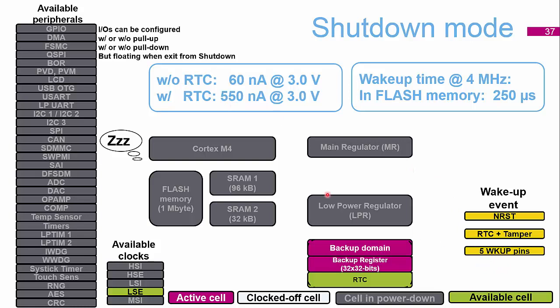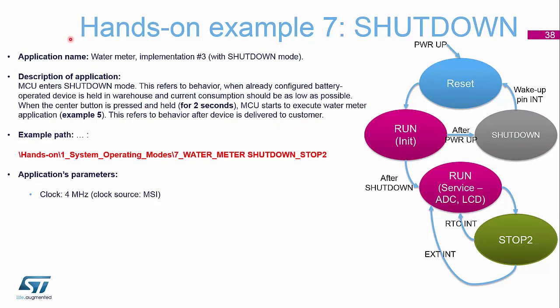With the RTC running for regular wake-ups we can get down to about 550 nanoamps. Using only the wake-up pin we can get down to about 60 nanoamps — a very good low power consumption mode. The example revisits the water meter from Stop Mode 2: the MCU enters shutdown mode to maximize battery life, then when the button is held down for at least two seconds the MCU starts executing the Stop Mode 2 continuous loop.